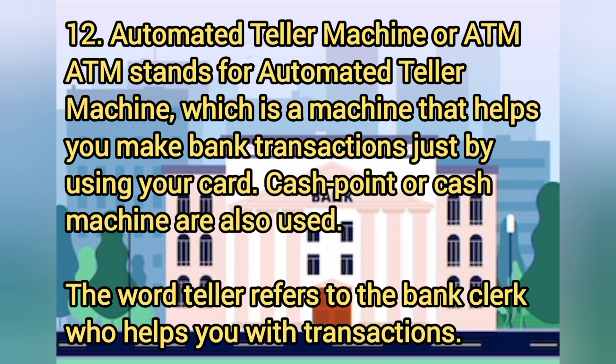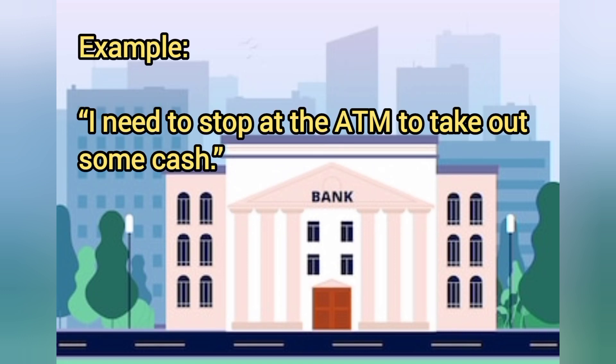Twelve: automated teller machine, or ATM. ATM stands for automated teller machine, which is a machine that helps you make bank transactions just by using your card. Cash point or cash machine are also used. The word teller refers to the bank clerk who helps you with transactions. Example: I need to stop at the ATM to take out some cash.